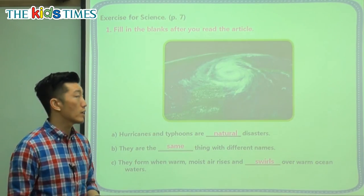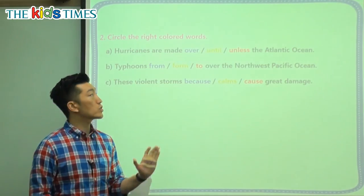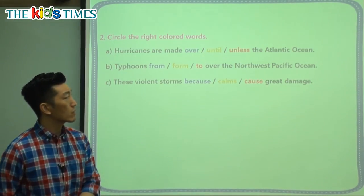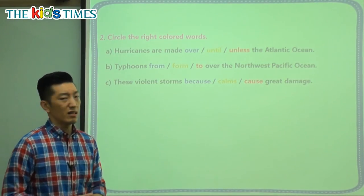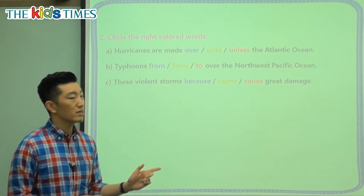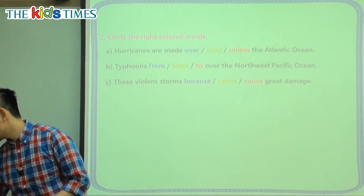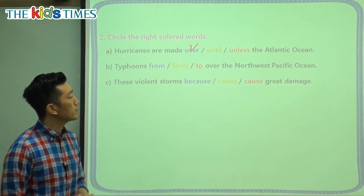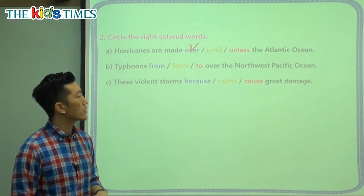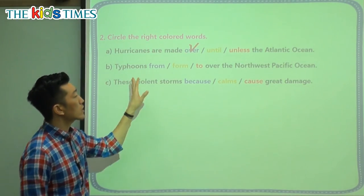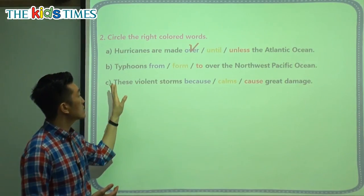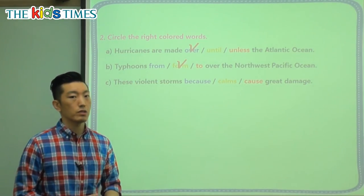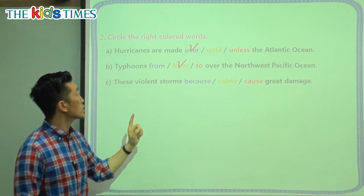This is why hurricanes or typhoons happen. Now let's circle the correct word. Hurricanes are made over the Atlantic Ocean — not 'until' or 'unless,' but over the Atlantic Ocean. Typhoons form over the Northwest Pacific Ocean. So remember: hurricanes — Atlantic Ocean; typhoons — Pacific Ocean.